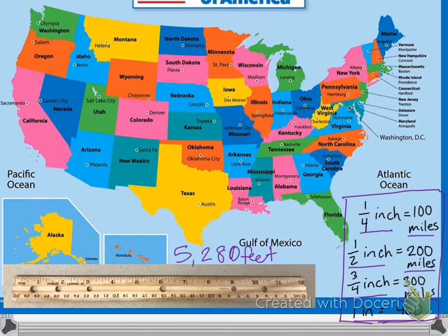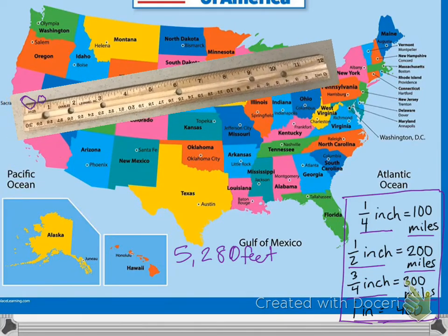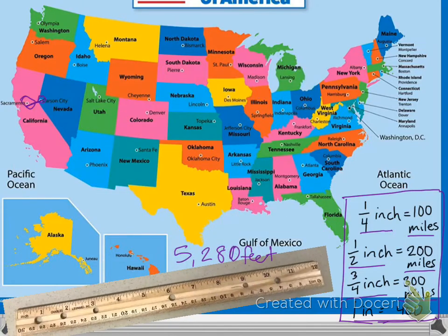If we look at the western part of the map, we have Sacramento, which is the capital of California, and next to it we have Carson City, which is the capital of Nevada. I can use my ruler to measure the distance between these two cities. As you can see, they are about a half of an inch apart, so the distance between Sacramento and Carson City is about 200 miles.